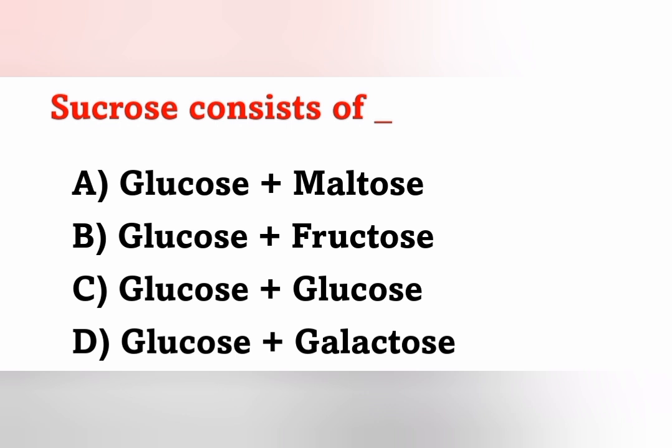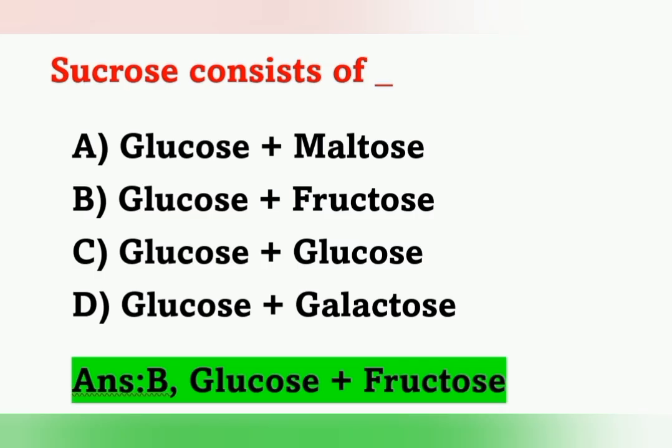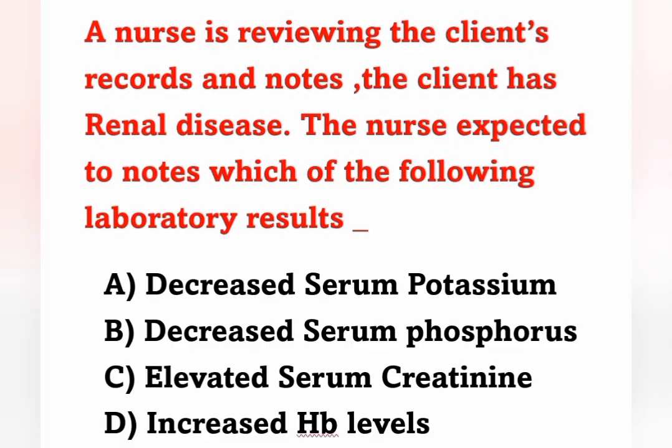Next question: Sucrose consists of which combination? Options: A) Glucose plus maltose, B) Glucose plus fructose, C) Glucose plus glucose, D) Glucose plus galactose. Sucrose consists of glucose plus fructose. Option B is the correct answer.